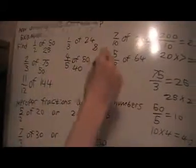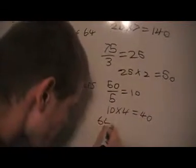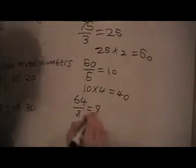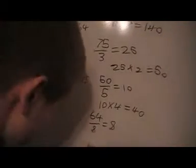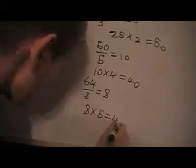Five eighths of 64. I divide 64 by 8, I get 8. And then times 8 by 5, and I get 40.